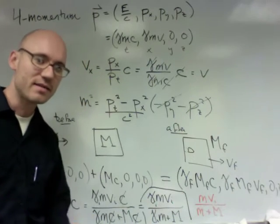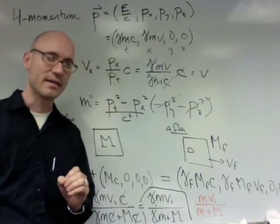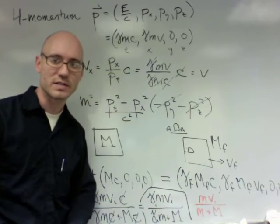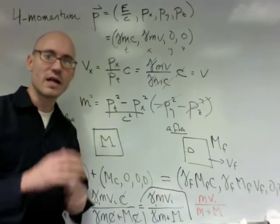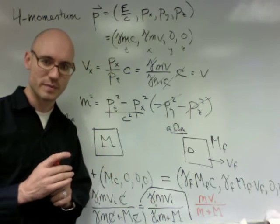But notice that if we take the limit that gamma goes to 1, or the velocity is small, in the limit that gamma goes to 1, this becomes exactly the same as the non-relativistic expression. So the relativistic and non-relativistic expressions become the same in the low speed limit.